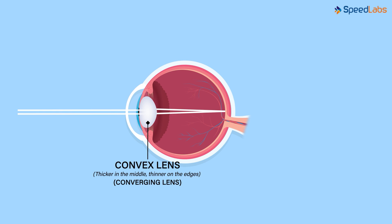In a normal eye, this point of focus lies on the inner boundary called the retina. In a defective eye, this point of focus may lie either in front of the retina or behind the retina. We will talk about this defect of the eye in our future videos, but first let's go back to our normal eye where light is focused on the retina.